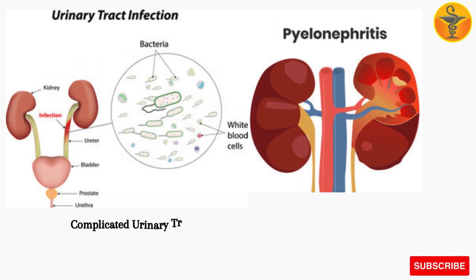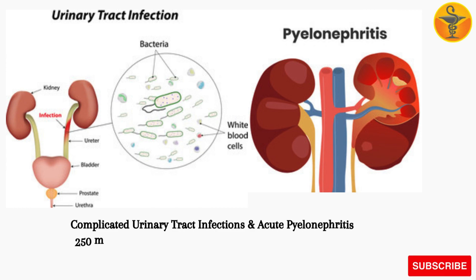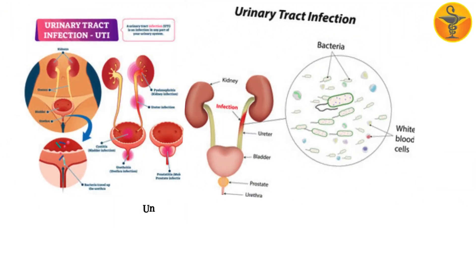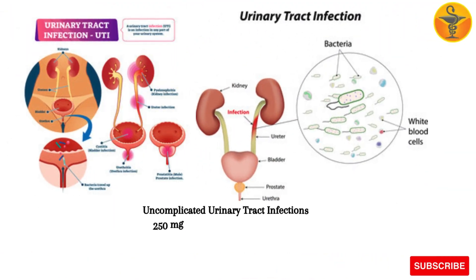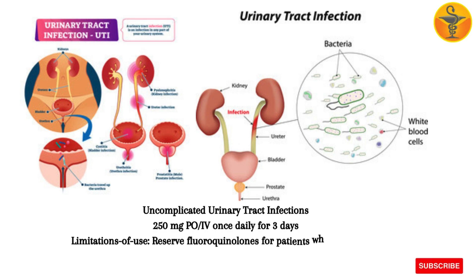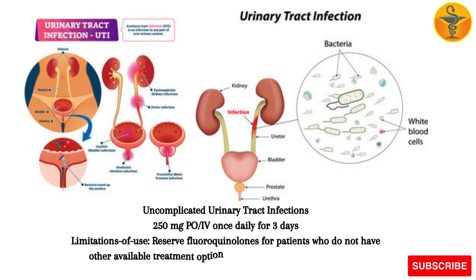Complicated urinary tract infections and acute pyelonephritis: 250 mg oral or intravenous once daily for 10 days, or 750 mg oral or intravenous once daily for 5 days. Uncomplicated urinary tract infections: 250 mg oral or intravenous once daily for 3 days. Limitations of use: Reserve fluoroquinolones for patients who do not have other available treatment options for uncomplicated urinary tract infections.